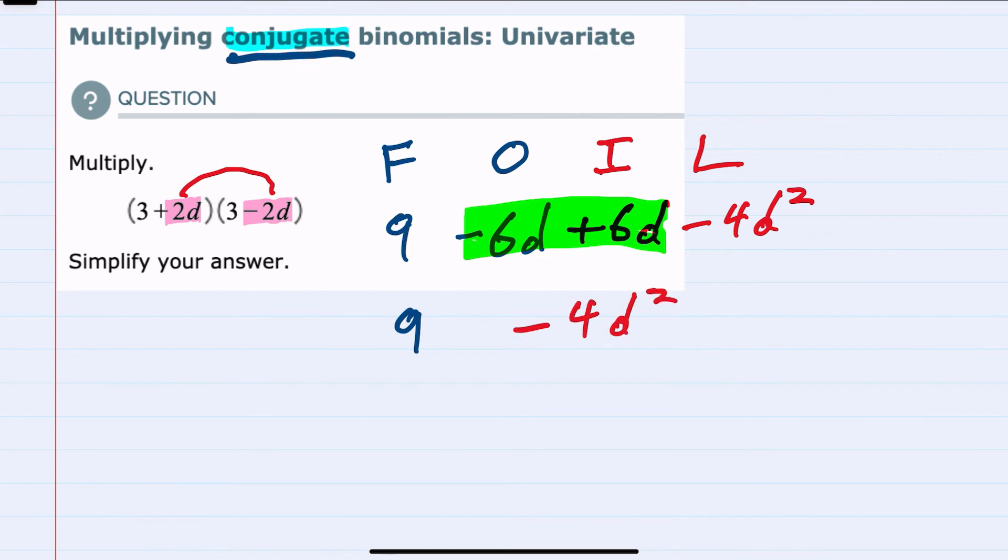Knowing that the outer and inner are always going to cancel whenever we multiply conjugates, we could have simplified the FOIL process down into just multiplying the first and the last because we were guaranteed that the outer and inner were going to cancel with conjugates.